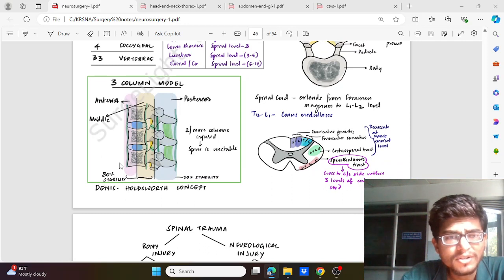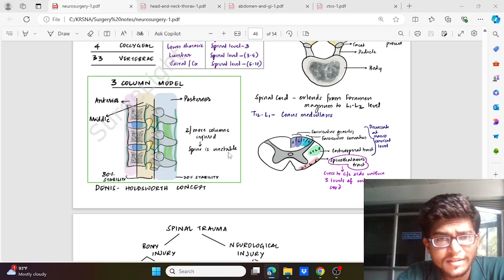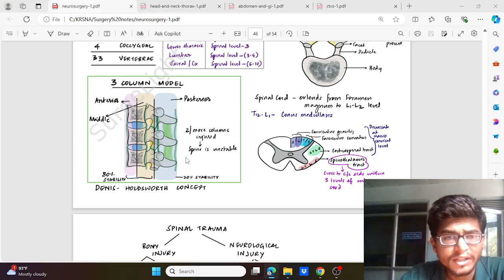Then considering the three column model which was given by Dennis and Holdsworth - the spinal column concept. There are three columns: anterior column, middle column, and posterior column. The anterior two columns account for 80 percent stability, and the posterior column which includes the lamina, the pedicle, and the spinous process account for 20 percent stability. If there is injury to two or more of these columns, the spine is unstable. If any of the two or more columns are injured, then the spine becomes unstable, and it will also depend on the amount of injury.